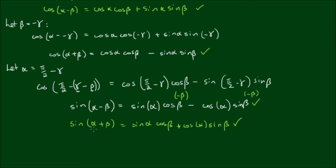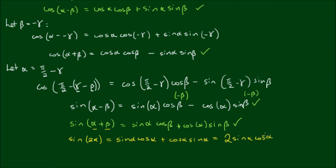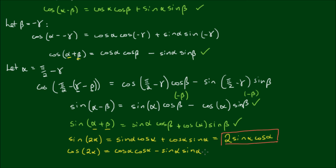Finally, let's look at the case where alpha and beta are equal to each other. From the sine addition formula: sine of 2 alpha equals sine alpha times cosine alpha plus cosine alpha times sine alpha, which equals 2 sine alpha cosine alpha. And from the cosine addition formula: cosine of 2 alpha equals cosine alpha times cosine alpha minus sine alpha times sine alpha, which equals cosine squared alpha minus sine squared alpha. These are handy double-angle identities to remember.